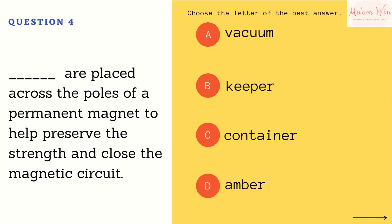Question number four: blanks are placed across the poles of the permanent magnet to help preserve the strength and close the magnetic circuit. Letter A, vacuum. Letter B, keeper. Letter C, container. Letter D, amber. Choose the letter of the best answer.